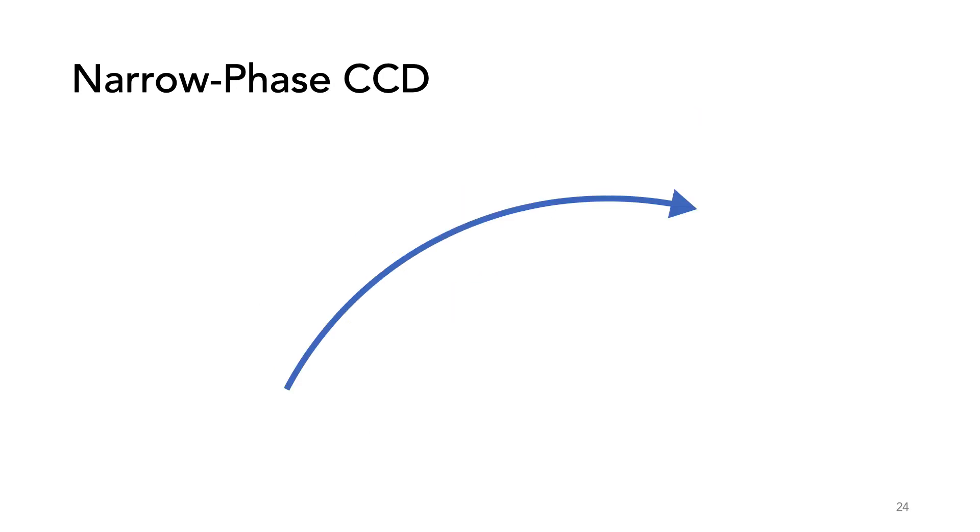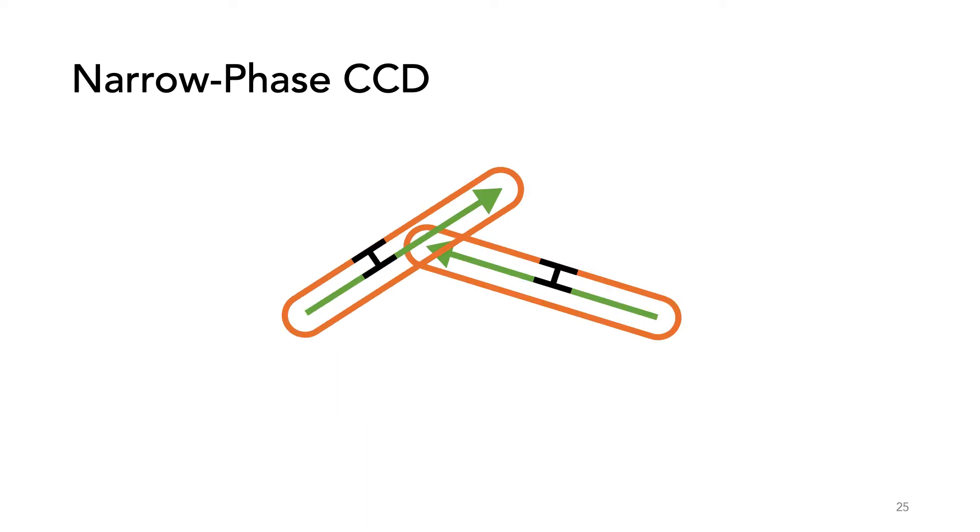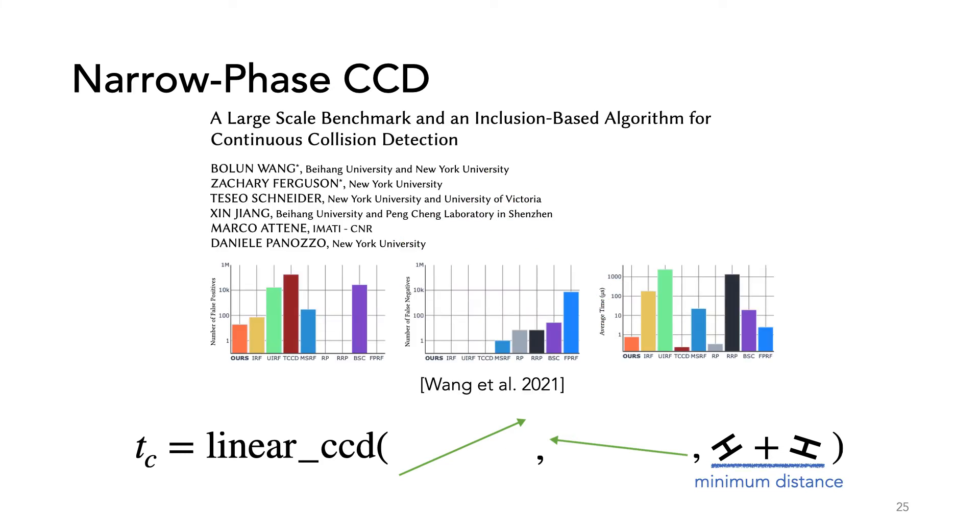To tighten this envelope, we can split the curved trajectory and approximate it with a piecewise linear trajectory. For each piece, we repeat the procedure, compute an error, and construct an envelope. Now the goal is to find if at a particular time these envelopes intersect. This is equivalent to linear CCD with minimum separation. For this, we use our recent paper which provides a provably conservative method for linear CCD with minimum separation.